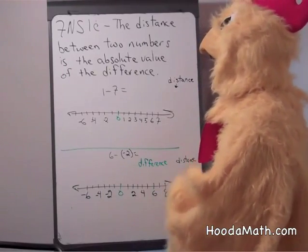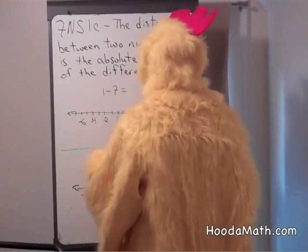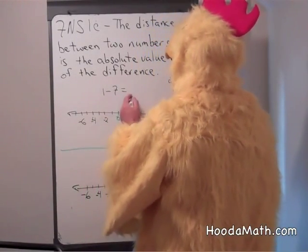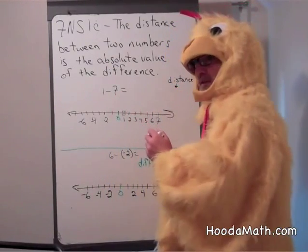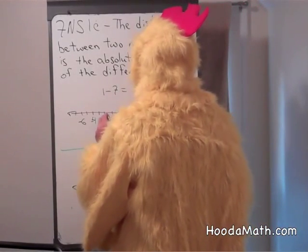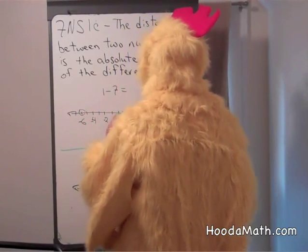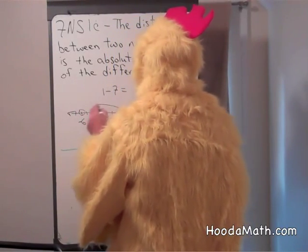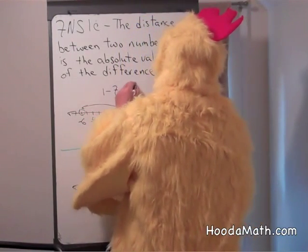So let's look at one minus seven. We start at one and we subtract seven. Subtracting a positive means moving to the left. One, two, three, four, five, six, seven. So one minus seven is negative six.